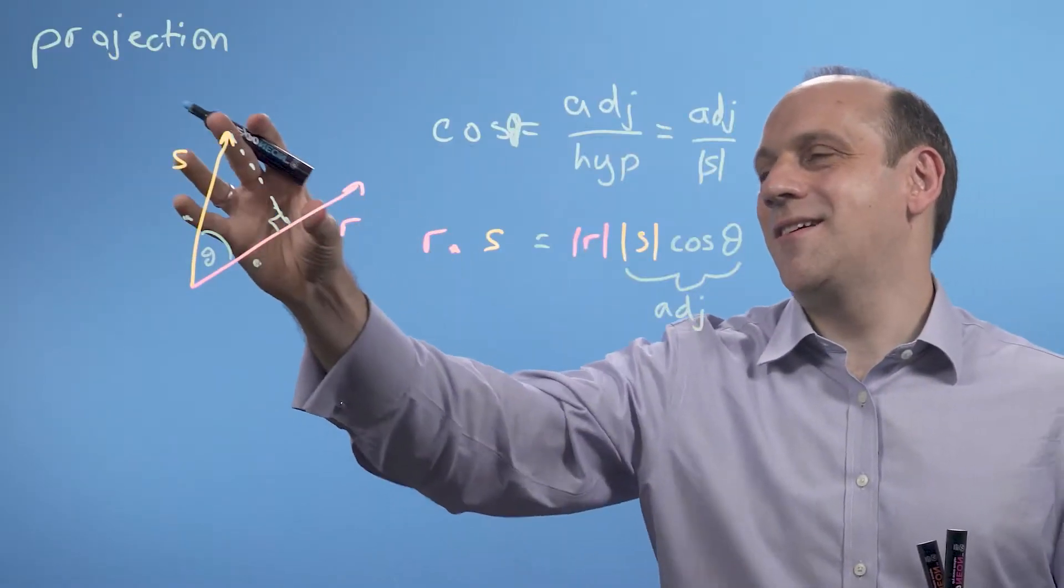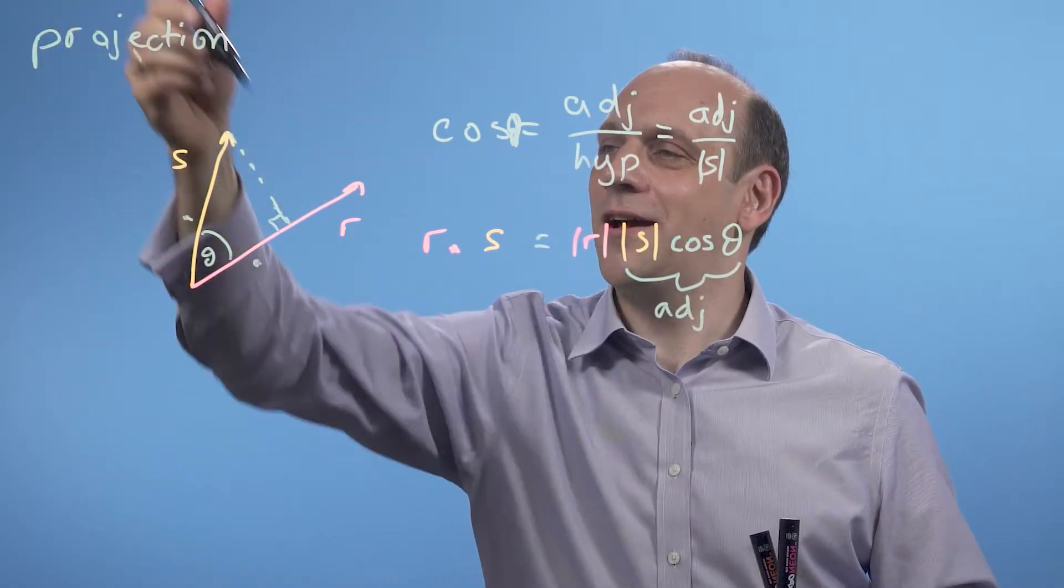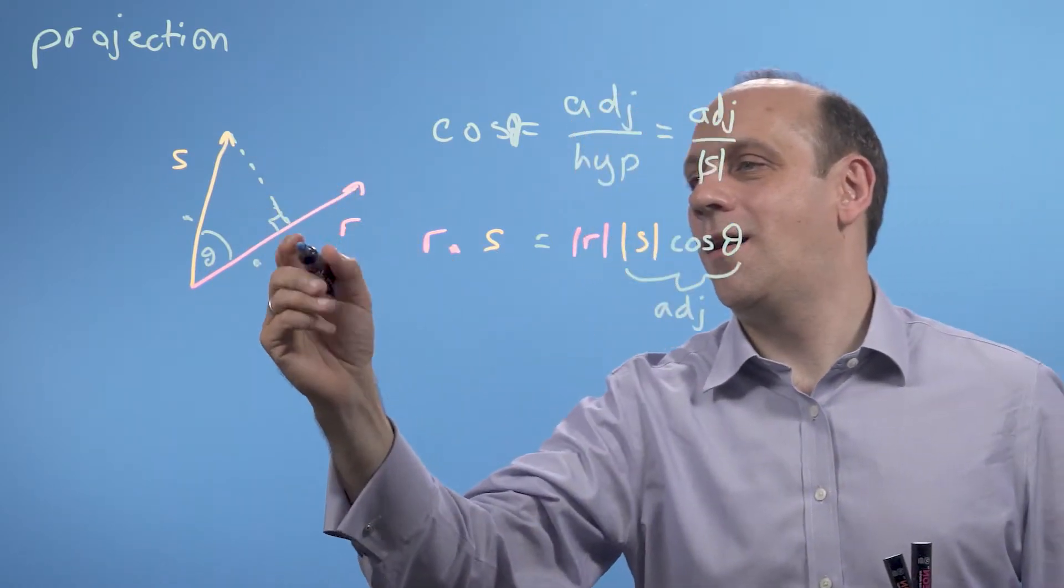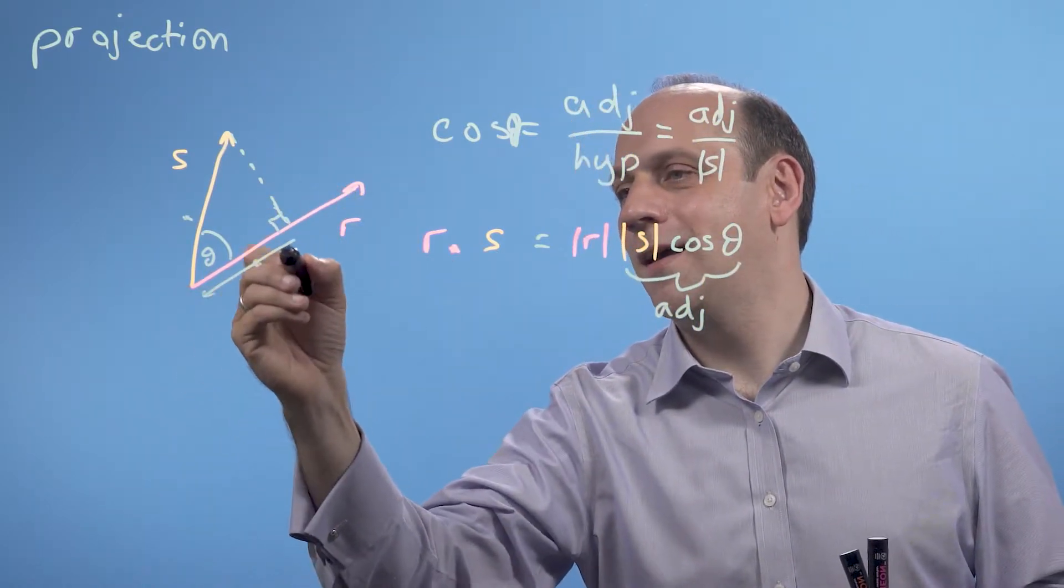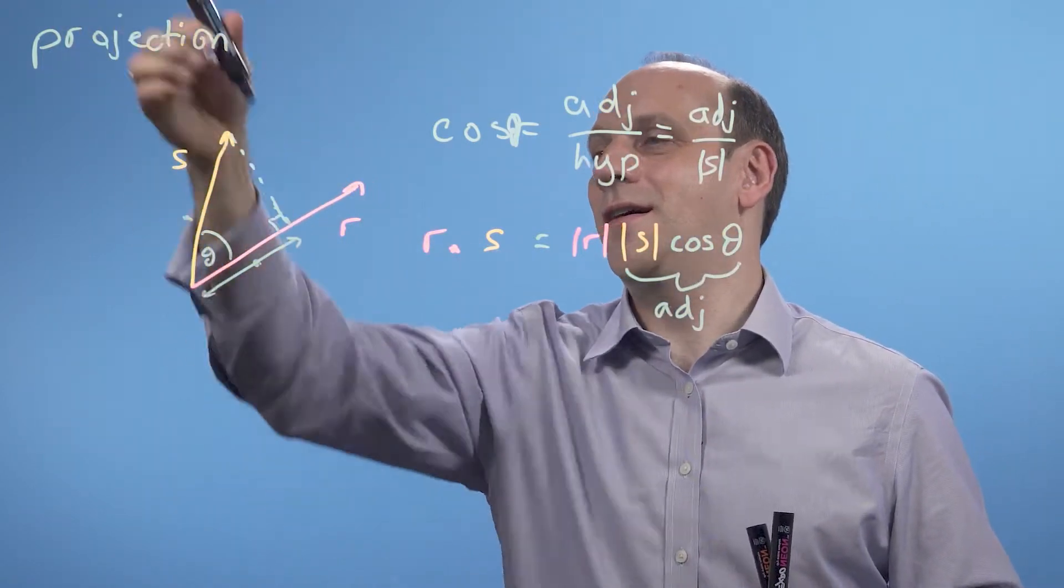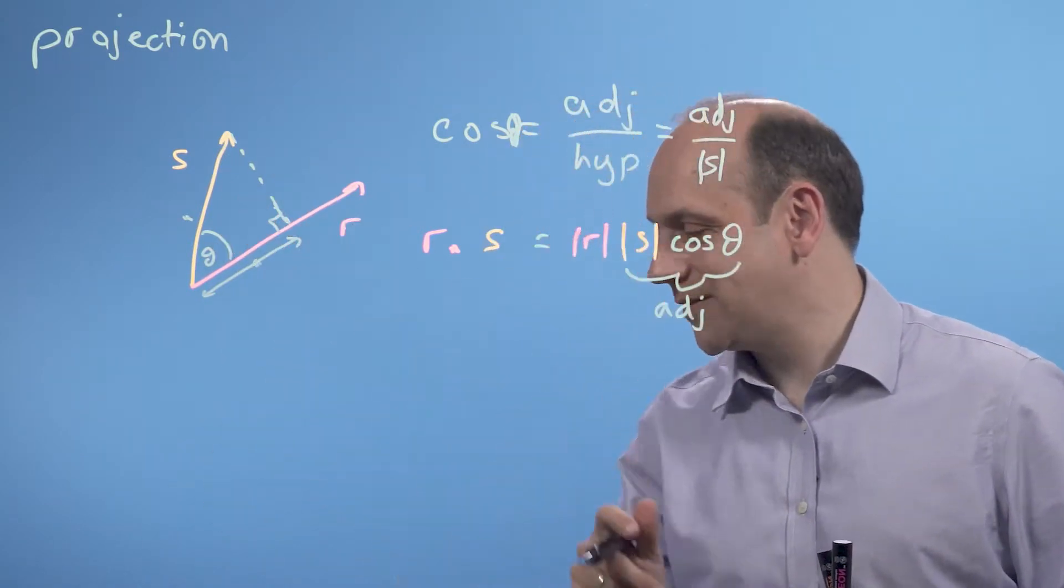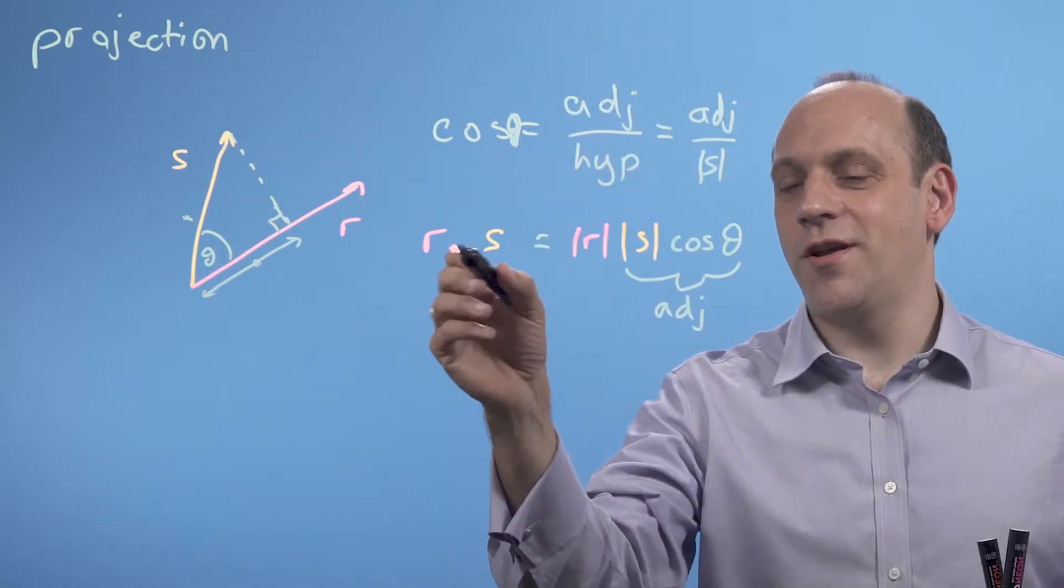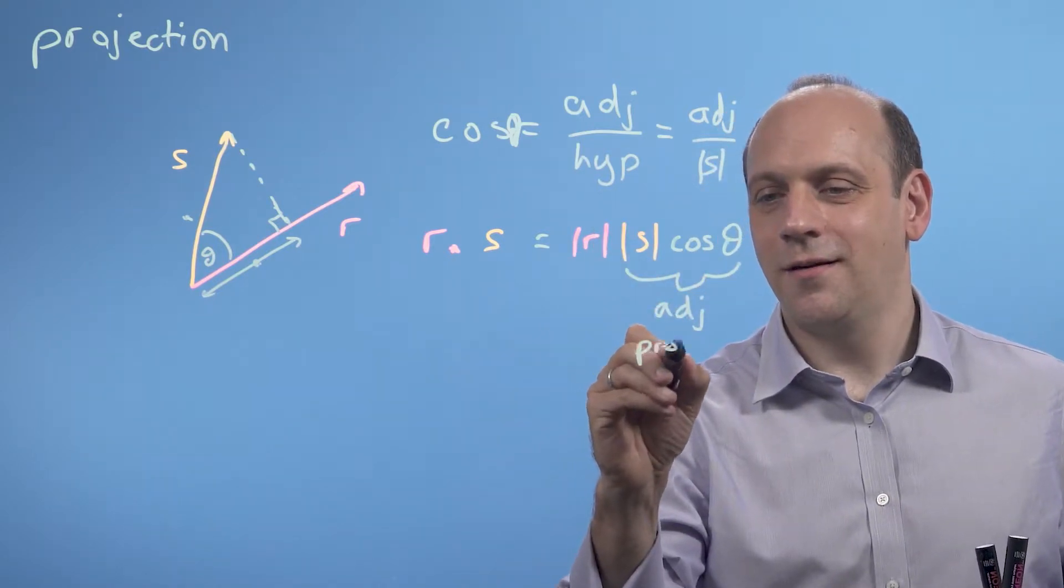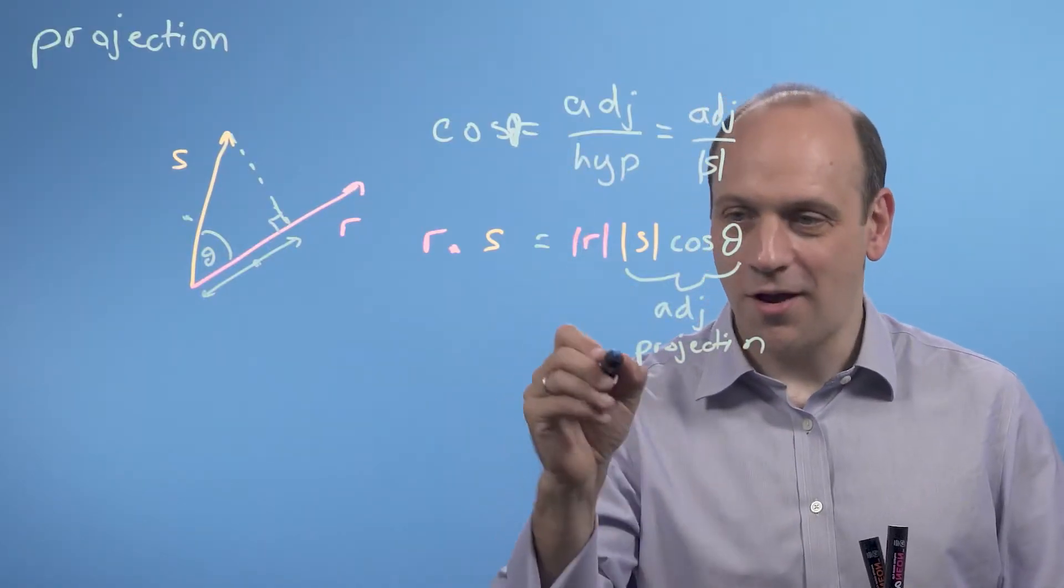So the adjacent side here is just kind of the shadow. If I had light coming down from here, it's the shadow of s on r, that length there. It's kind of a shadow cast if I had a light at 90 degrees to r shining down on s. And that's called the projection. So what the dot product gives us is it gives us the projection here of s onto r times the size of r.